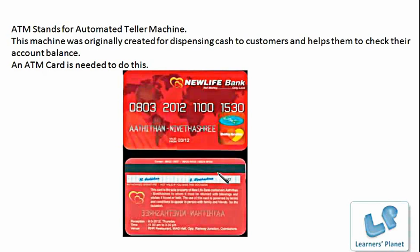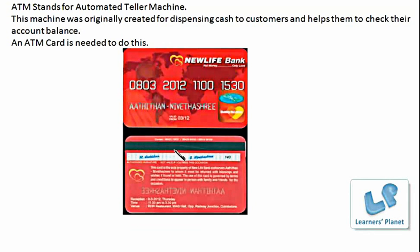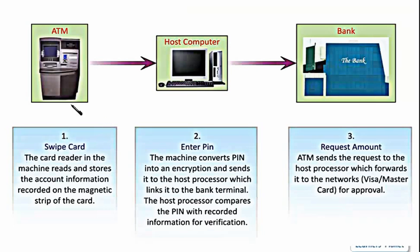Now let's see how money is withdrawn from an ATM machine. This is an ATM — an automated teller machine. The first step is to swipe the card. Inside the machine, there is a card reader. The card reader reads and stores the account information recorded on the magnetic strip of the card. The magnetic strip should not be scratched — you should carry ATM cards very carefully.